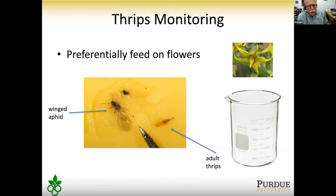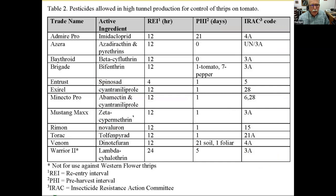For thrips monitoring, thrips preferentially feed on flowers. You can flick a flower and look for thrips crawling on the leaf, or place the flower in a container with soapy water or rubbing alcohol so thrips come out — that's a good way to monitor presence. Yellow sticky cards are also useful for monitoring, not control — you can see winged aphids and adult thrips on the card.